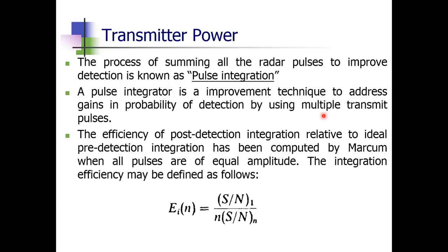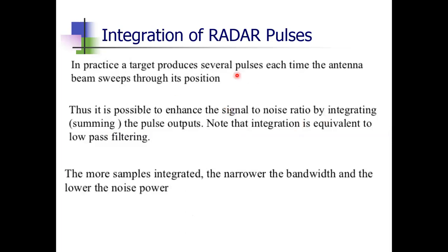The target produces several pulses each time the antenna beam sweeps through its position. One sweep corresponds to one PRI — pulse repetition interval. Many PRIs would be sent and then the sweeps are integrated together to get the final PD. This integration also enhances the signal-to-noise ratio (SNR). Since integration is equivalent to a low-pass filter, more integration samples give lesser noise power and narrower bandwidth.